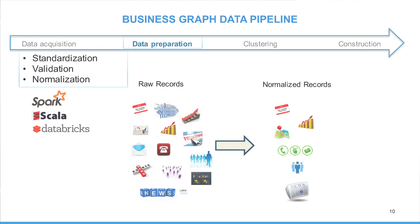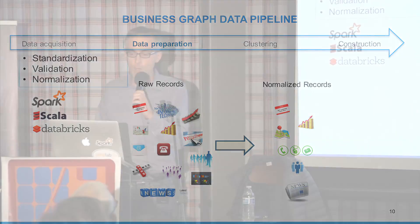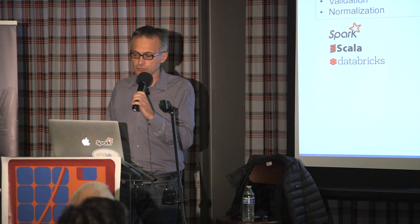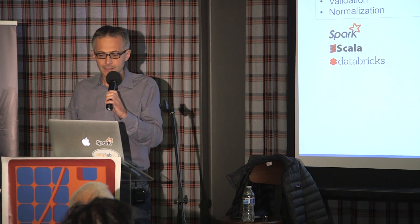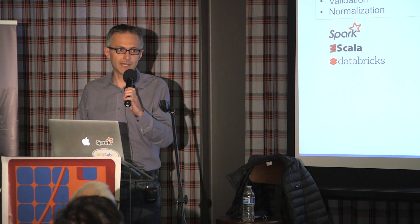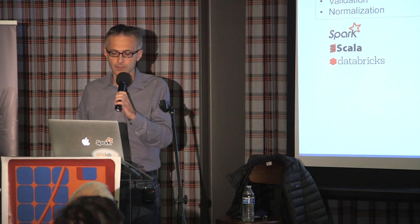The next step is data preparation. In that step, we standardize the data so that every data type is represented the same way — for instance, we have to standardize addresses. We also do validation to get rid of incorrect data. Lastly, we normalize the data so it looks the same across records. For instance, we can see records on the left across sources, and to the right we have normalized data — a single view for employees, whereas on the left we get many different sources providing employee information.